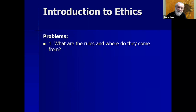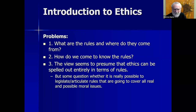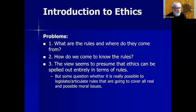Problems with deontological theories: what are these rules, and where do they come from? The person proposing a deontological system must not only articulate the rules but also explain how they arise, where they come from, and what justifies them. How do we come to know these rules? It doesn't seem to be a straightforward empirical matter — we can't do biology to discover these rules. The view also seems to presume that ethics can be spelled out entirely in terms of rules, but some question whether it's really possible to articulate rules covering all real and possible moral issues, since human interactions are very organic and unpredictable.